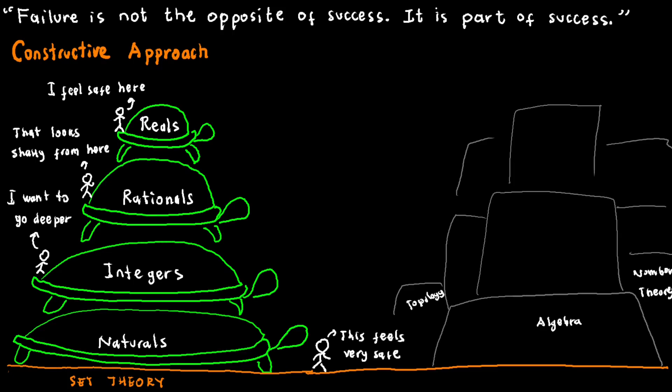This doesn't imply unanimous certainty or a lack of skeptics within the mathematical community. Instead, it signifies the prevailing confidence placed in set theory at this juncture. The most compelling evidence in its favor lies in the absence of contradictions discovered thus far, despite its pivotal role in the underpinning structure for all contemporary mathematics.